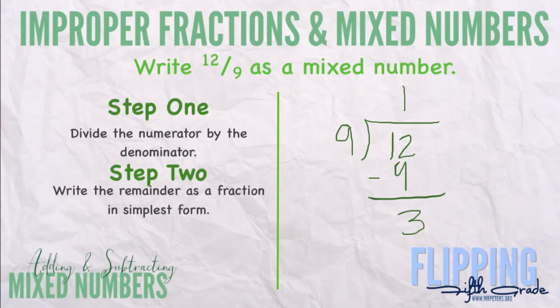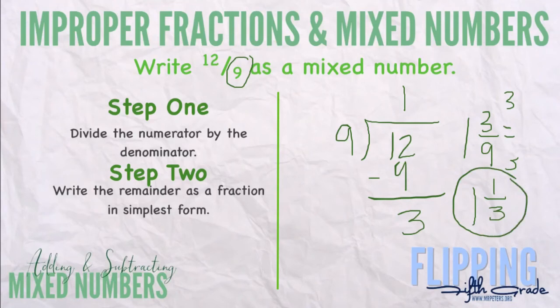So I write the remainder as a fraction in simplest form. Remember, my denominator doesn't change. So I'm going to have 1 and 3 ninths. And we know 3 and 9 share a factor of 3. So we're going to divide the top and the bottom by 3. Then we can keep our whole number. And 3 divided by 3 is 1. And 9 divided by 3 is 3. So 12 ninths is the same as 1 and 1 third.